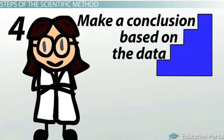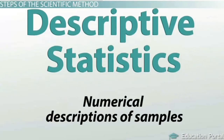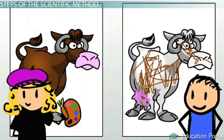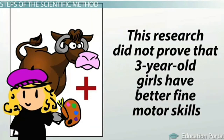Fourth, you will make a conclusion based on the data you obtain. This is where descriptive statistics come in — descriptive statistics are numerical descriptions of samples. When our researcher ran the numbers, she found a positive relationship between good coloring skills and being a three-year-old girl, and a negative relationship between good coloring skills and being a three-year-old boy. This shows that three-year-old girls color better than three-year-old boys. This research did not prove that three-year-old girls have better fine motor skills, but it does add support for the researcher's hypothesis.